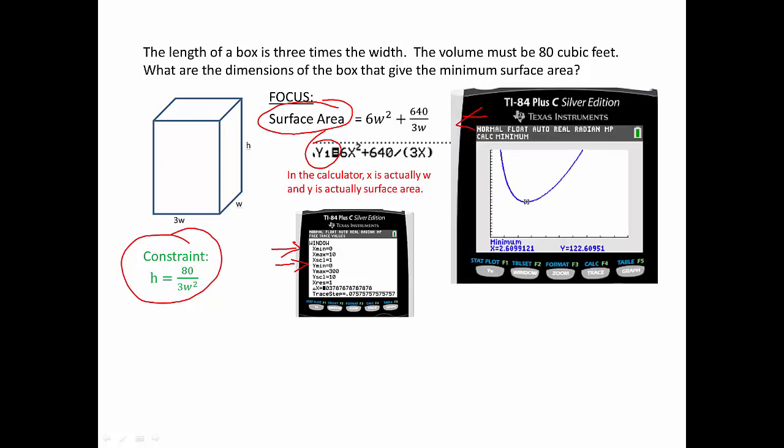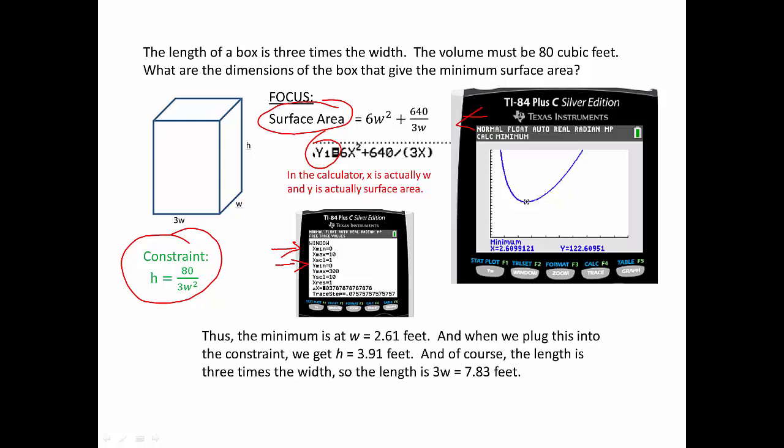And I already found the minimum. So I have part of the answer to my question. It's going to be W is 2.61 feet. Right, X is 2.61, but X is actually W. And then we plug this into the constraint. If we plug W in here, we get our height. And of course, the length is 3 times the width. So the length is 7.83 feet. And that was the question. What are the dimensions of the box? And we're done with the problem.